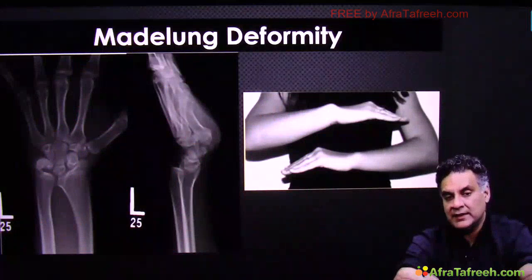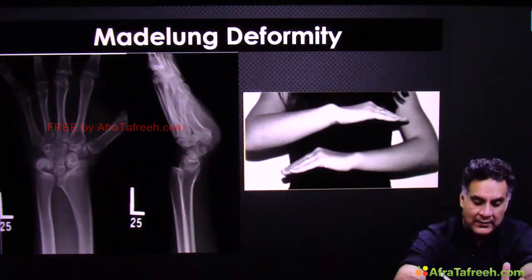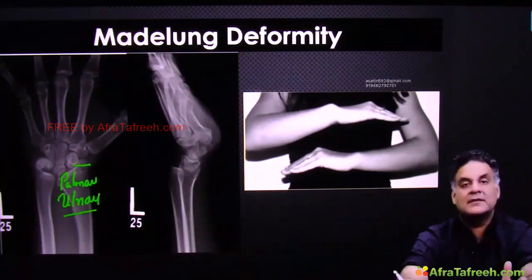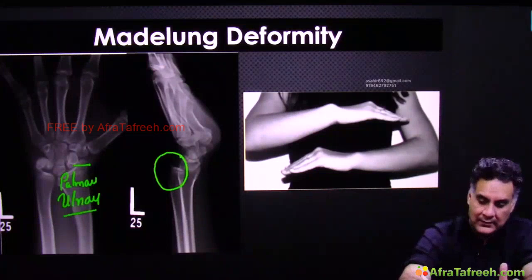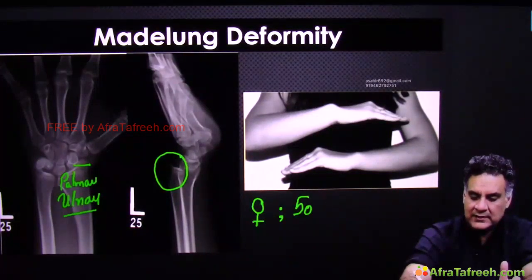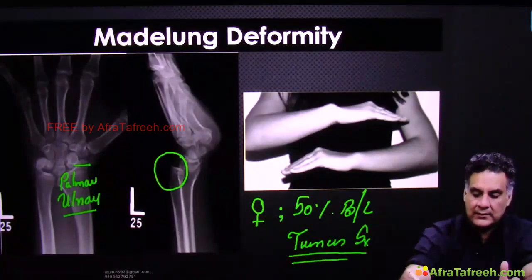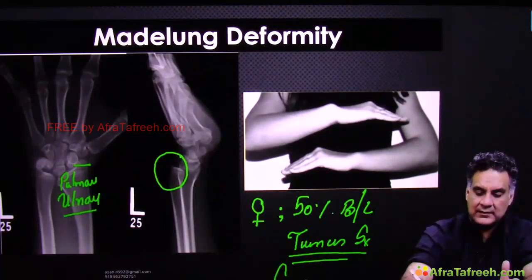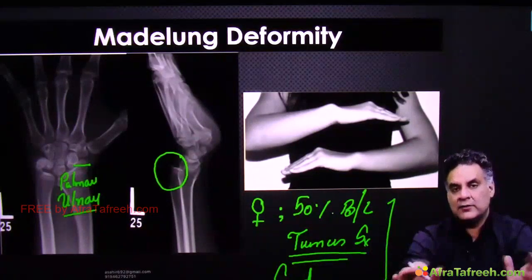Madelung deformity is an abnormality around the lower end of the radius, where the palmar and ulnar aspect of the lower end of radius is less developed. The lower end of ulna becomes more prominent. It is more common in females; 50% of cases are bilateral. It is associated with Turner's syndrome. It has good results and normal function — nothing much is required.